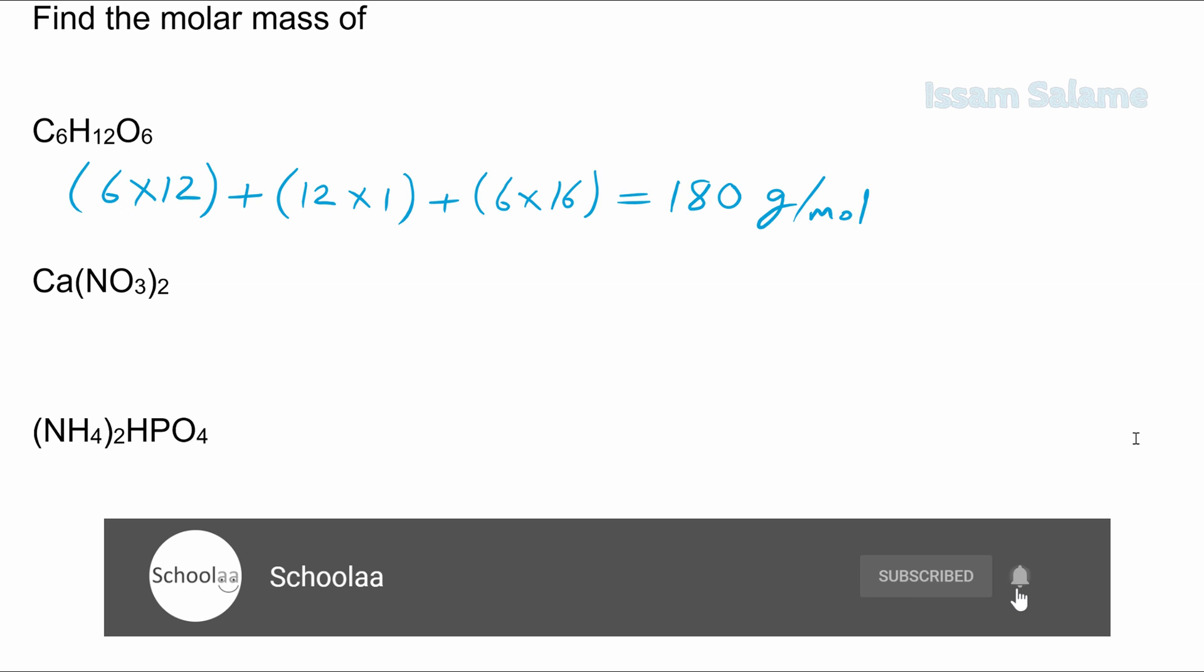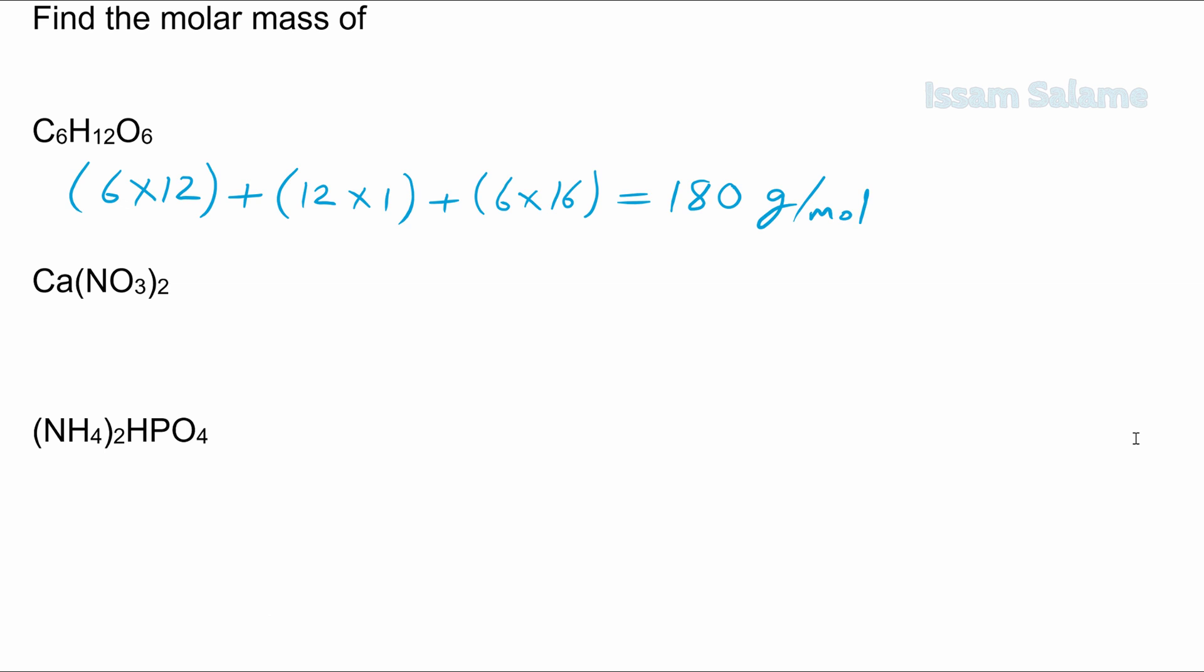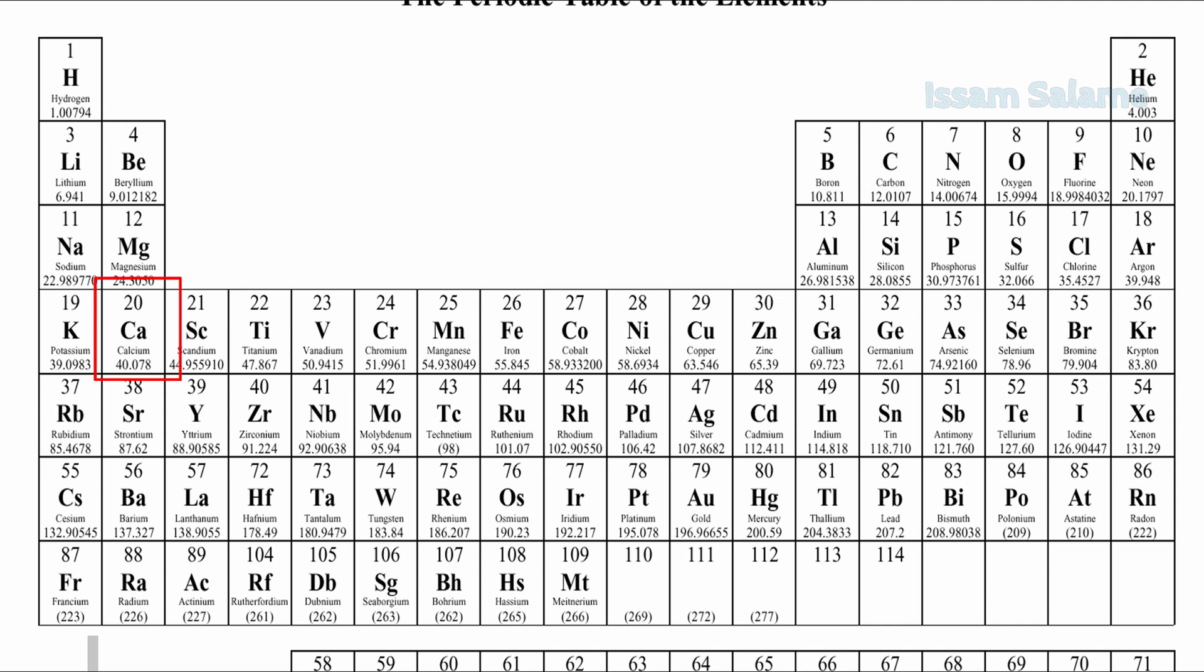In the next formula, we have calcium, nitrogen, and oxygen. Let's check the molar mass on the periodic table. The molar mass of calcium to the nearest tenth is 40, nitrogen is 14, and oxygen is 16.